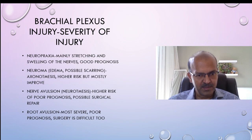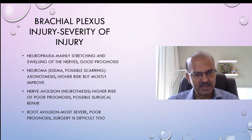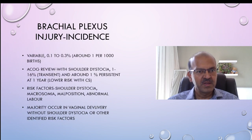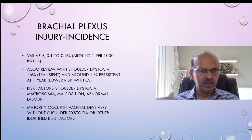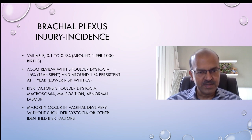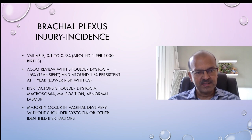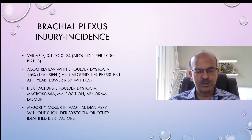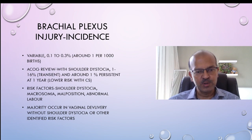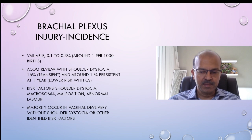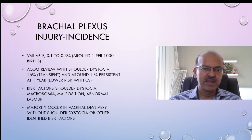It's very difficult to localize exactly where the damage is, but if multiple levels are involved it's more likely at the root level. The incidence is variable — it can be 0.1 to 0.3 percent, roughly one per thousand births. If there is shoulder dystocia, 1 to 16 percent is transient and around 1 percent is persistent at one year. The risk is lower with caesarean section. Risk factors include shoulder dystocia, macrosomia, malposition, and abnormal labor. Majority occur in vaginal delivery without shoulder dystocia or other associated risk factors.